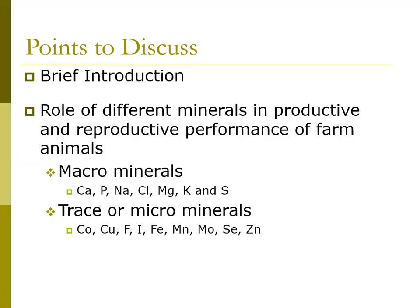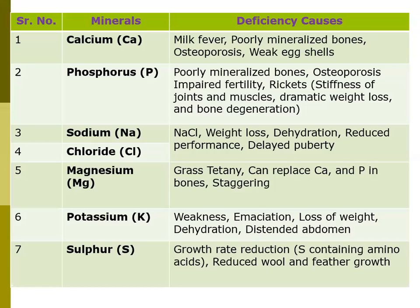Let's start with the macro minerals. There are almost seven macro minerals, and the deficiency of each mineral causes specific problems, or their imbalances cause different issues in the animal body. Some of these issues are common in both humans and animals.